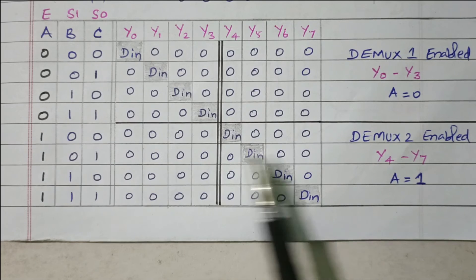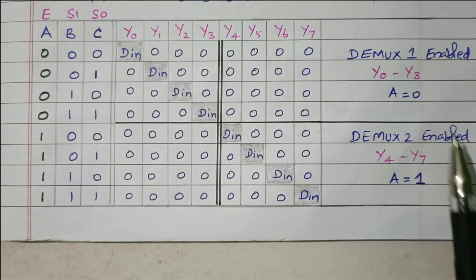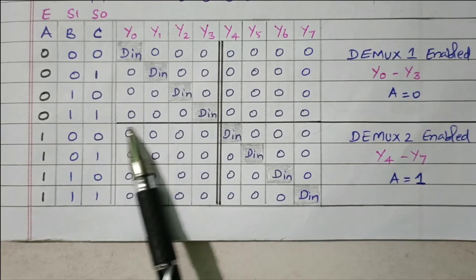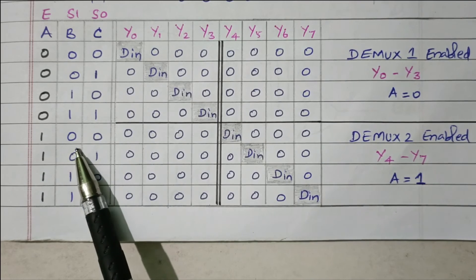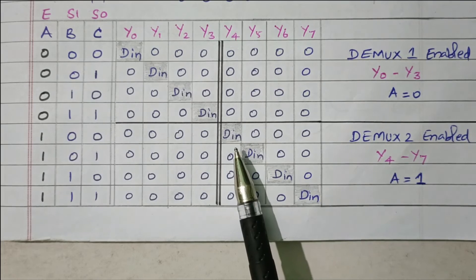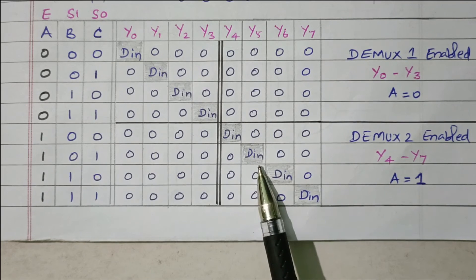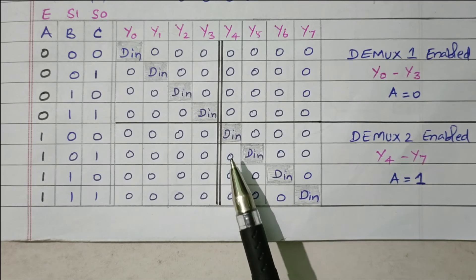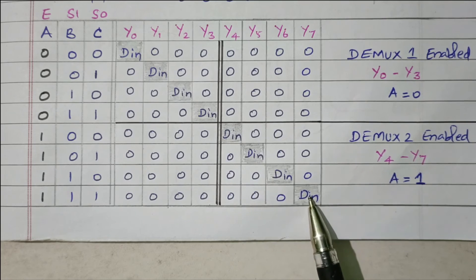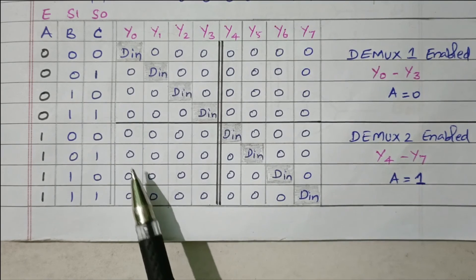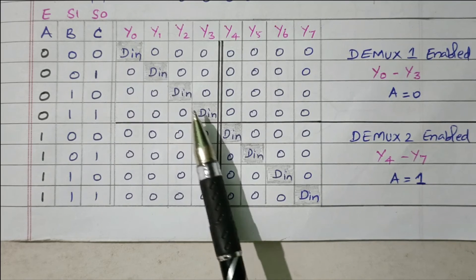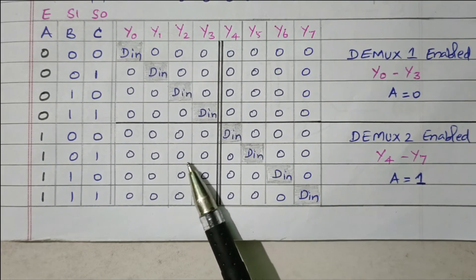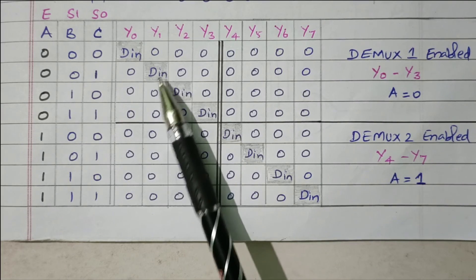When A=1, demux2 is enabled and demux1 is disabled — so Y0–Y3 are all 0. Outputs Y4–Y7 become active. With B,C=0,0 output is at Y4; 0,1 gives Y5; 1,0 gives Y6; 1,1 gives Y7. So the complete truth table shows 8 distinct outputs Y0 through Y7, implementing a full 1-to-8 demultiplexer using two 1-to-4 demultiplexers.